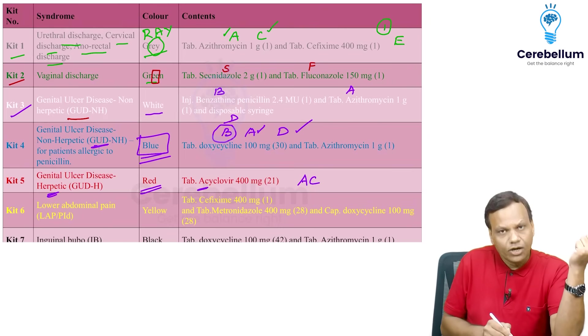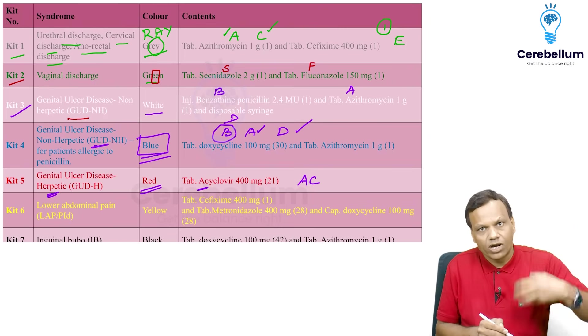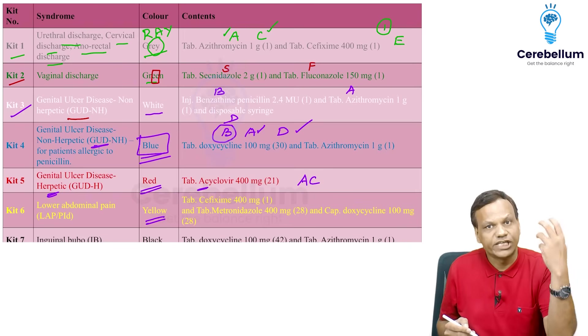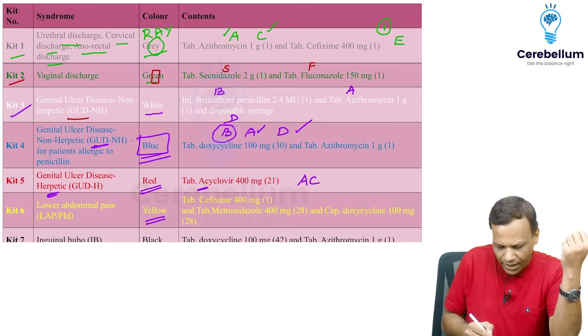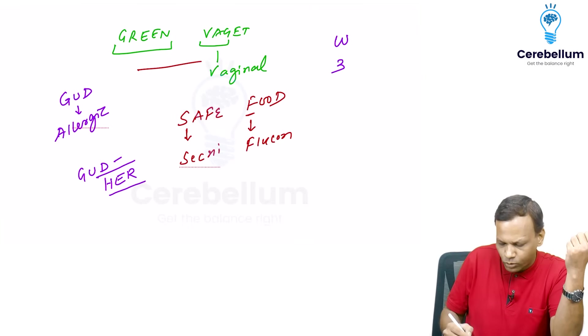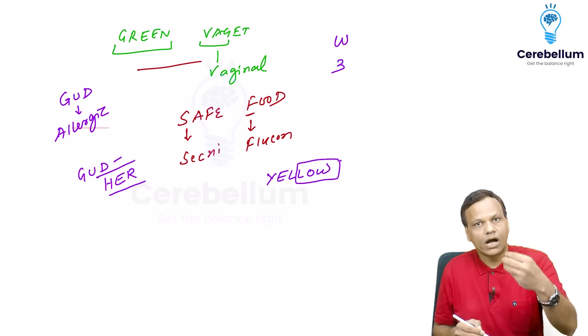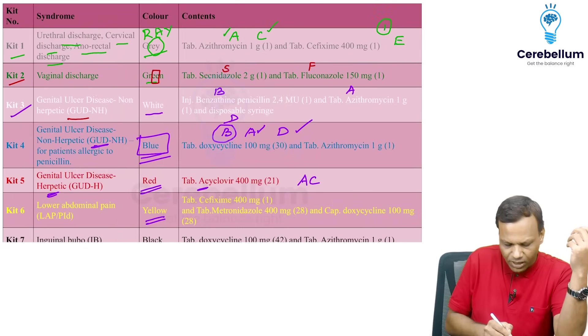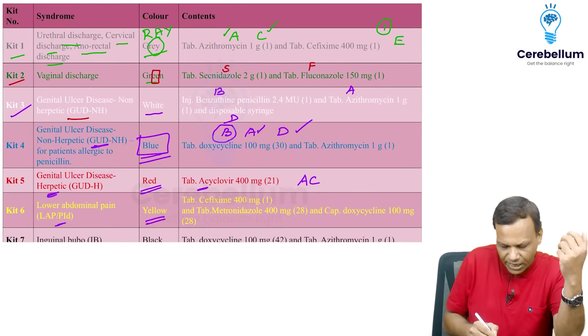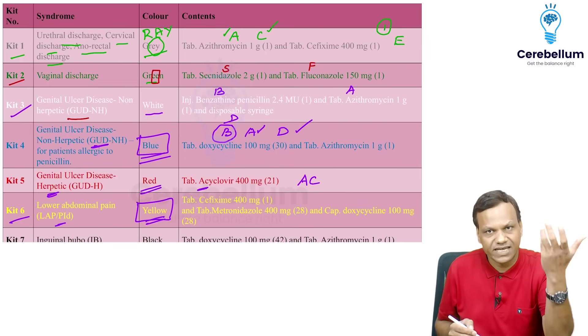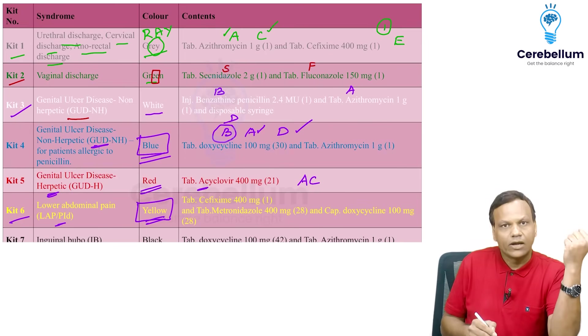Then next is lower abdominal pain. For lower abdominal pain, pelvic inflammatory disease, we have kit which is yellow. You can remember yellow ends with L-O-W. Yellow. It is low. So it is for lower abdominal pain. So lower abdominal pain, we have yellow. And yellow has six letters, so it is kit six. Yellow is kit six, it has six letters. So yellow.